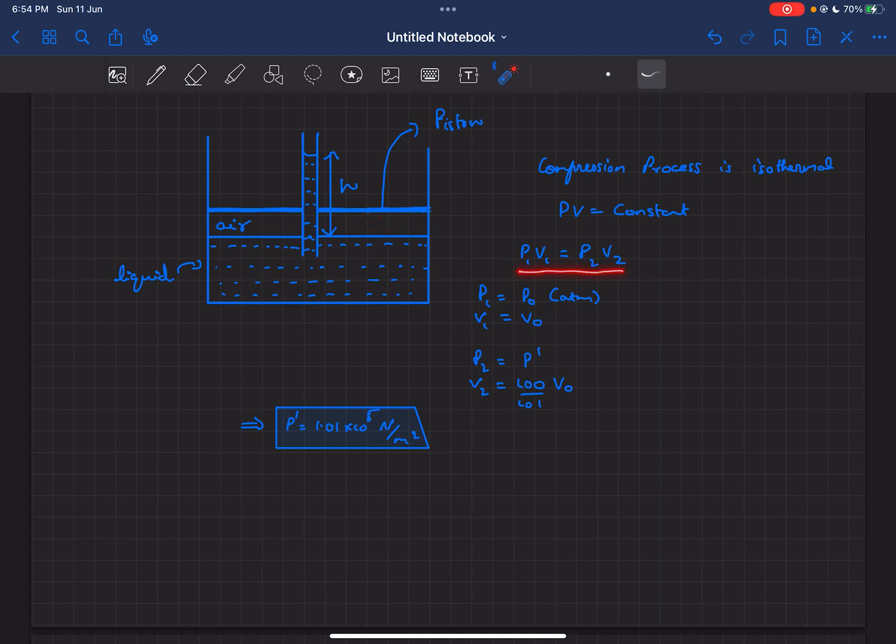We can say p1v1 equals p2v2 as the process is isothermal. Initially the pressure is p0 and the volume is v0. The final volume of the air column is given, so we can solve for the final pressure and get it to be p dash.